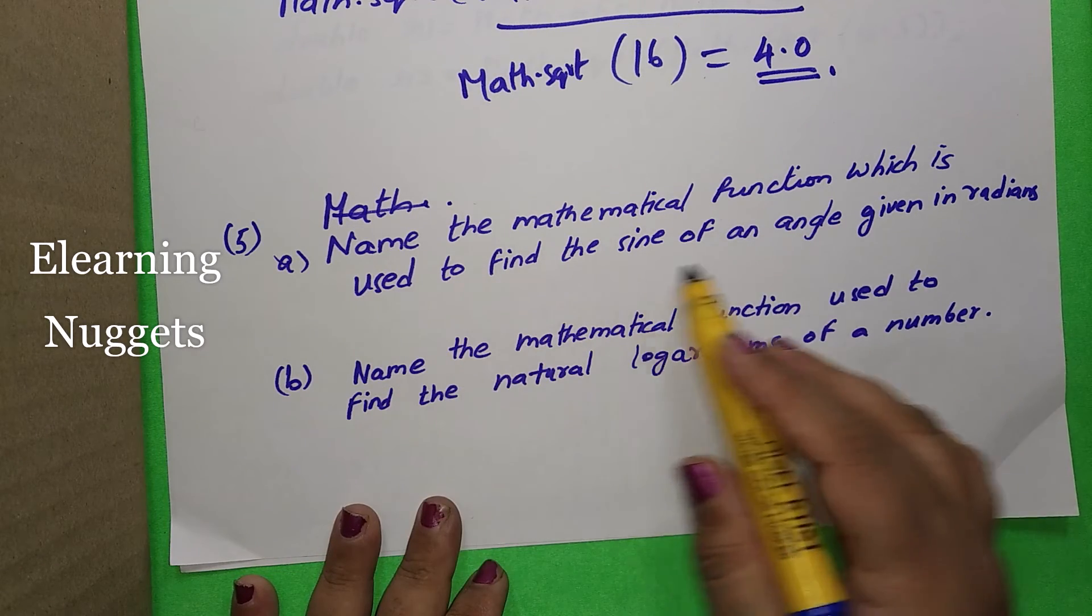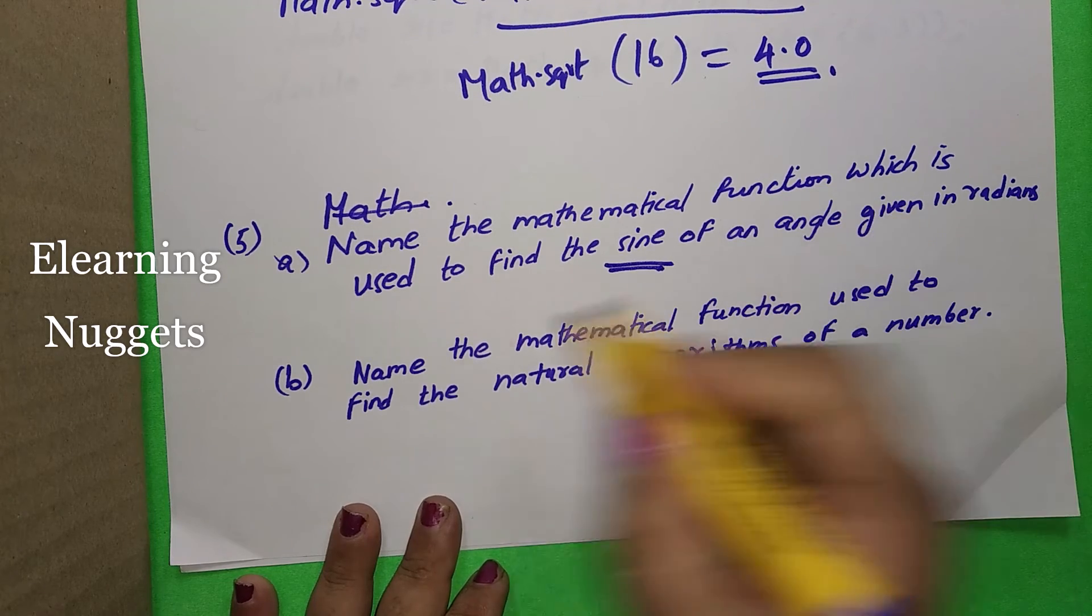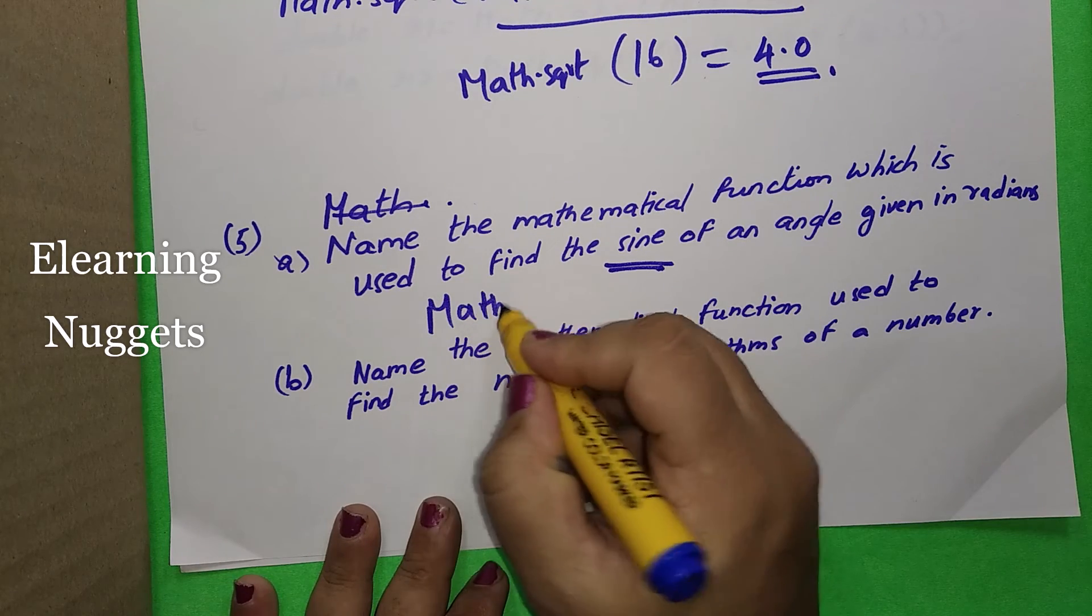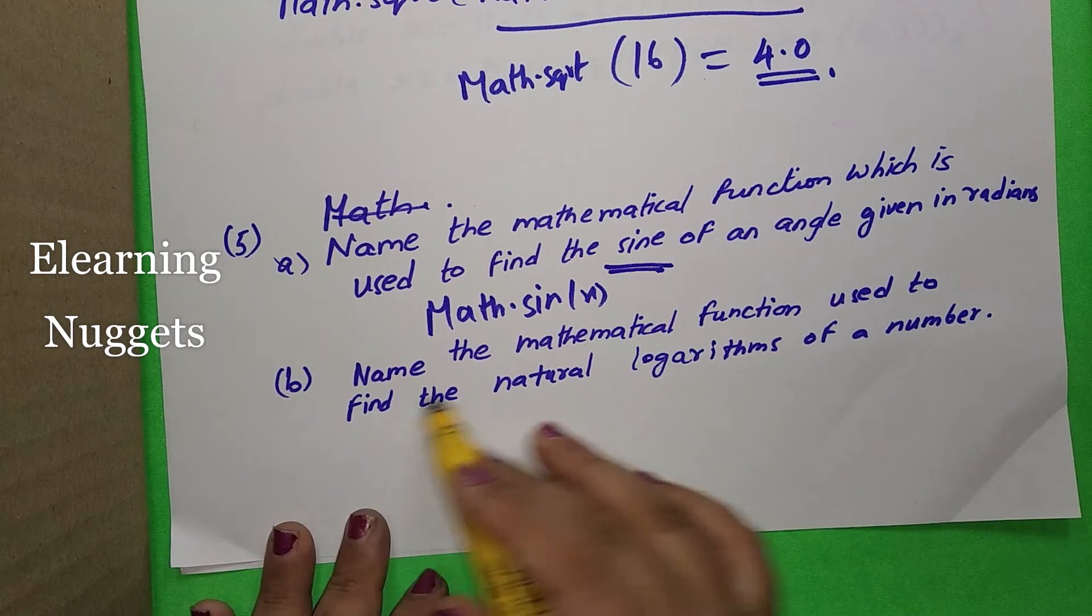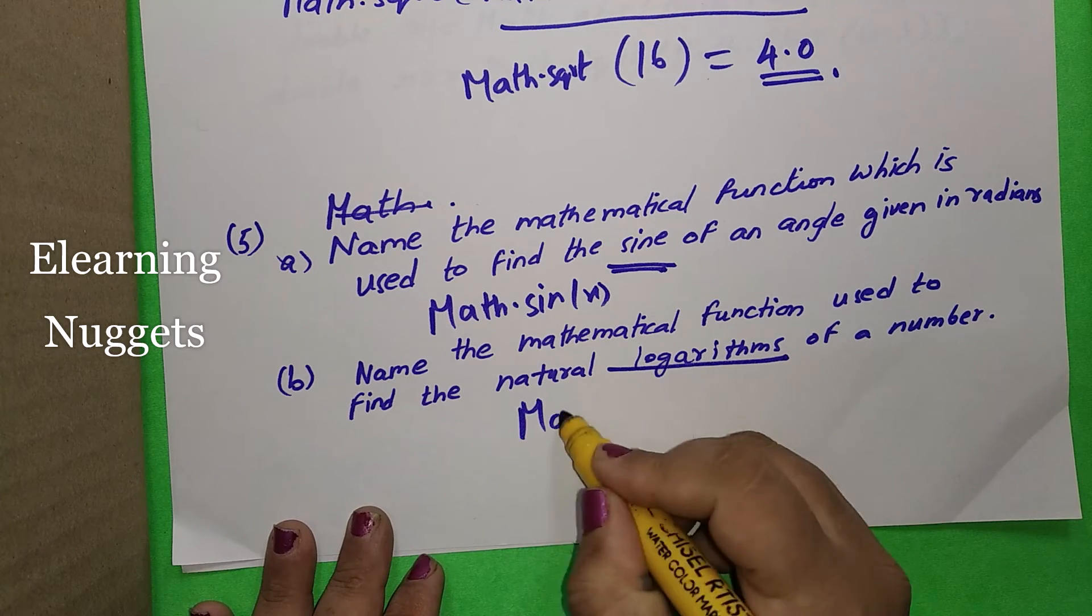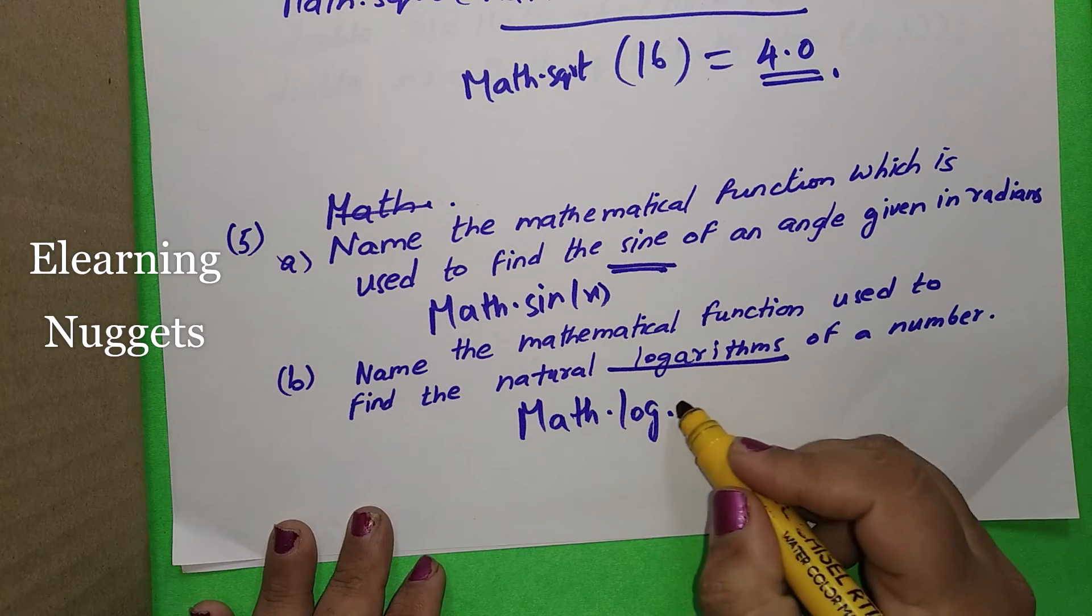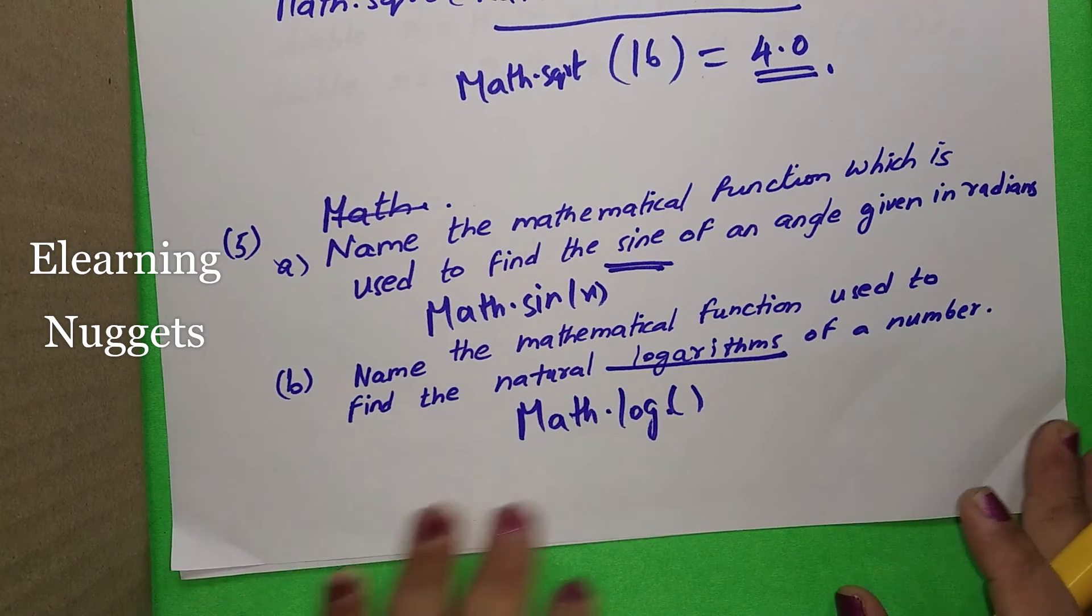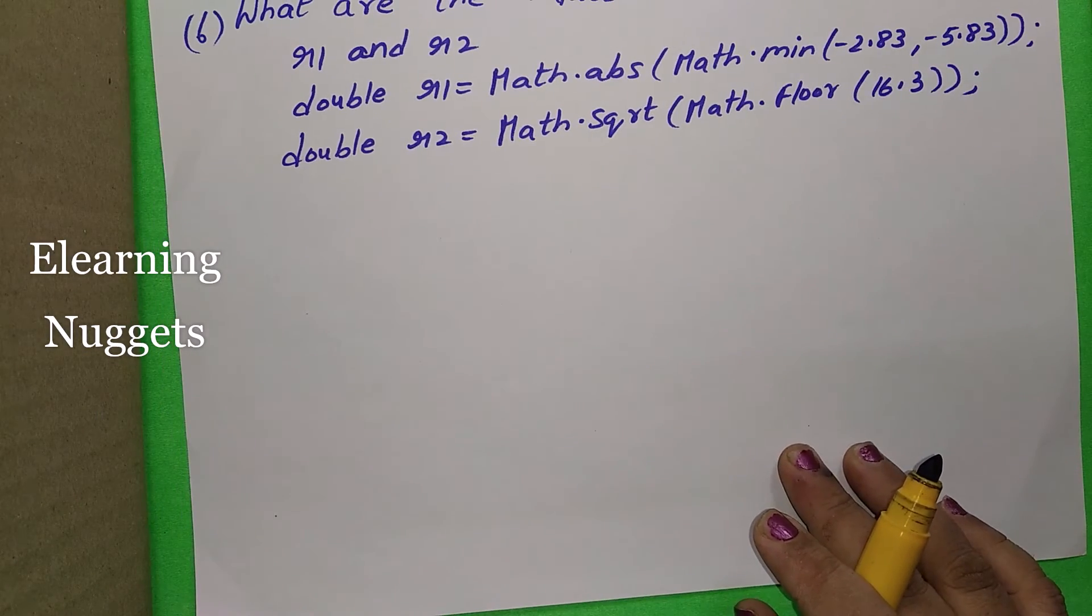Next question. Name the mathematical function which is used to find the sine of an angle given in radians. They have just asked you to name the function. What is that? Math dot sin. You just put an x here. Name the mathematical function used to find the natural logarithms. Logarithms means what will you write? Math dot log. If you write, you get the marks. This is another question. And here, one more I have. The last one here.